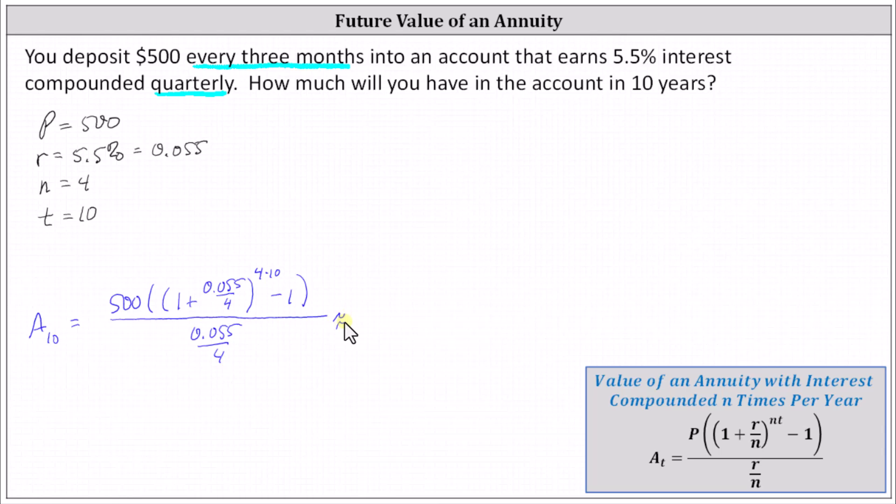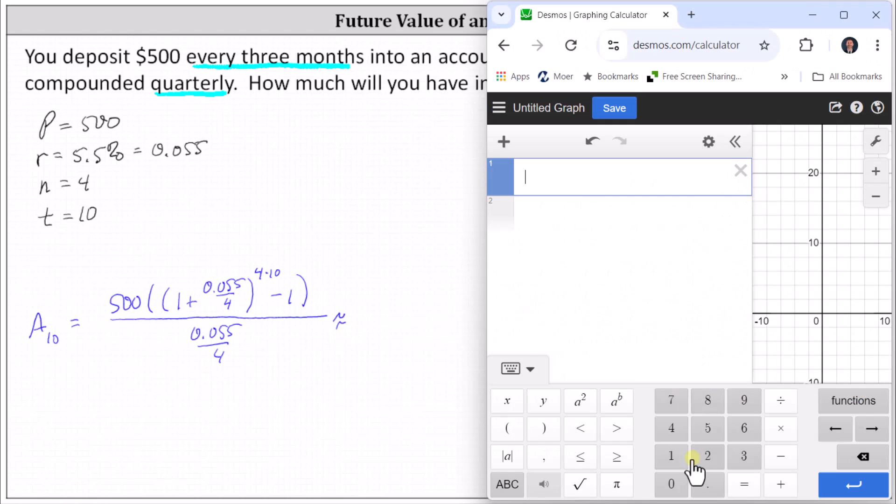And now we'll go to Desmos and enter this quotient carefully and round to the nearest cent. We enter 500, open parenthesis, open parenthesis, one plus 0.055 divided by four, right arrow, close parenthesis, raised to the power of four times 10, which is 40. Right arrow, minus one, close parenthesis, divided by, 0.055 divided by four, enter.